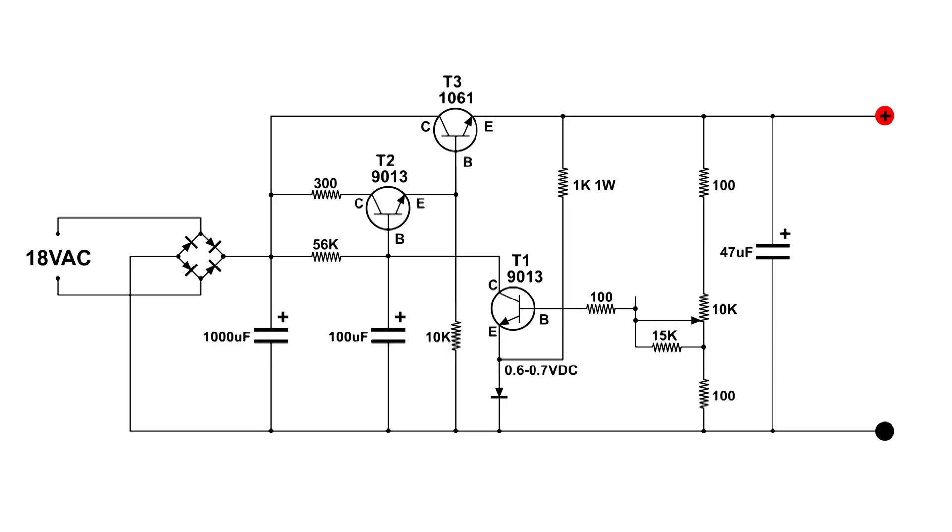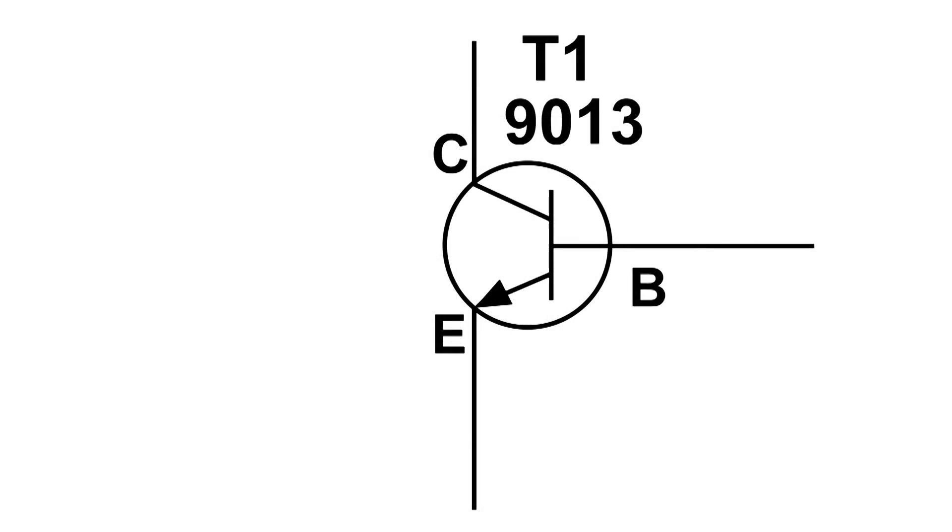All three of these transistors are NPN. So we'll just take a look at T1. Here is the symbol for an NPN transistor, and what's inside of that little unit is a silicon chip with N-doped material, then in the middle is P-doped material, and then another N-doped material.